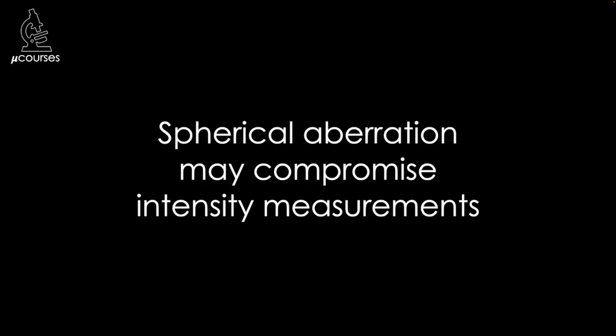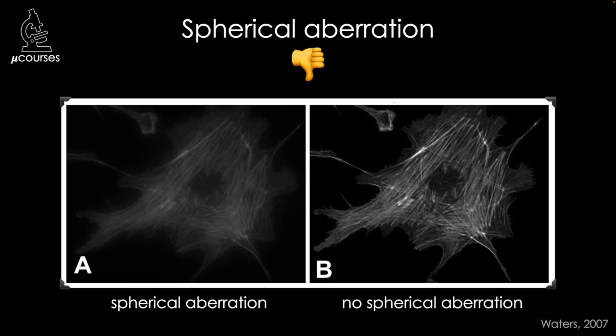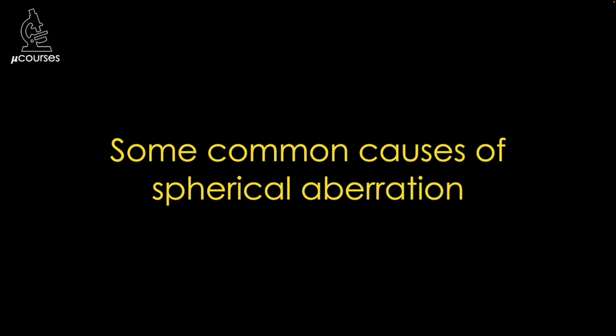The presence of spherical aberration may compromise the accuracy of some intensity measurements. But even if you're not making intensity measurements and your experiment doesn't require maximum resolution, spherical aberration just makes images look bad — and it's not always obvious that image quality is suffering until you've made the effort to look for it and reduce it. I want to emphasize that these are both wide-field fluorescence images; all I've done is reduce spherical aberration in the image. Let's discuss some of the common causes.